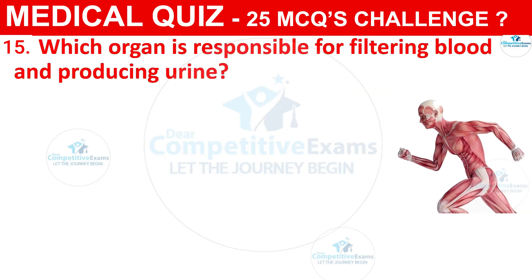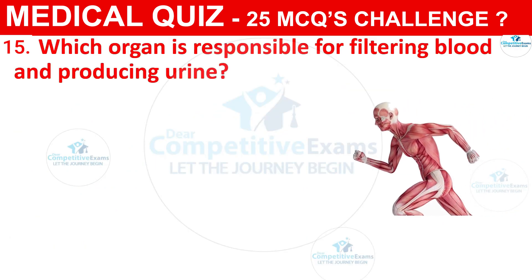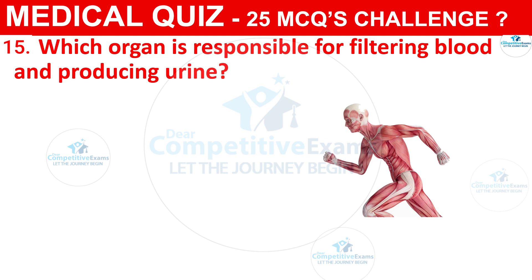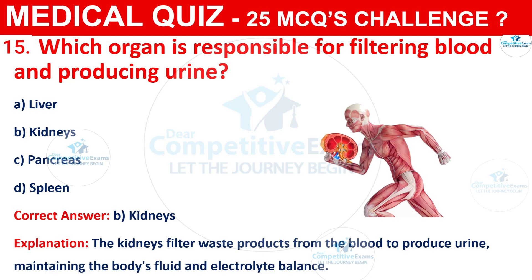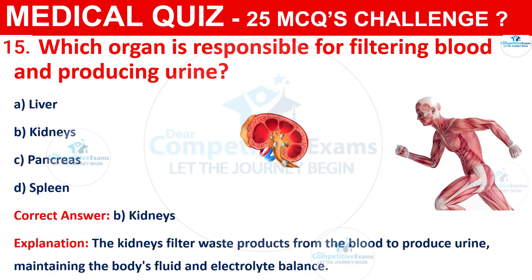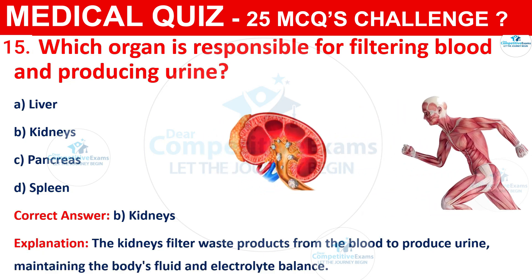Question 15: Which organ is responsible for filtering blood and producing urine? The options are Liver, Kidneys, Pancreas, or Spleen. The correct answer is B, that is Kidneys. The kidneys filter waste products from the blood to produce urine, maintaining the body's fluid and electrolyte balance.